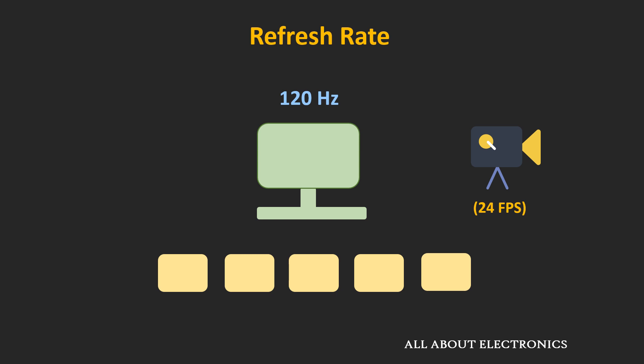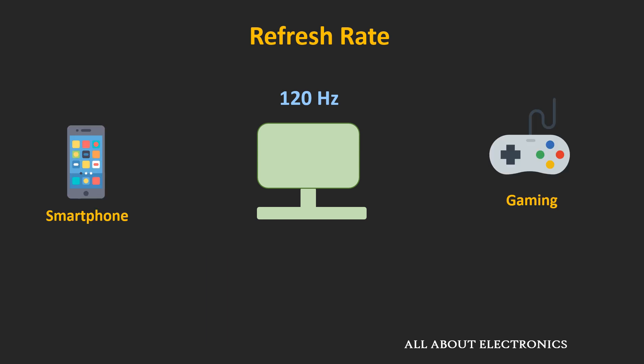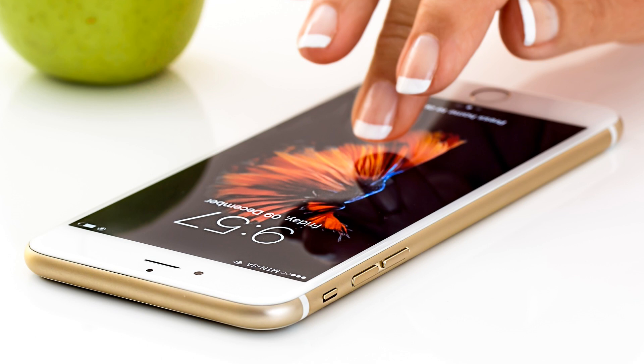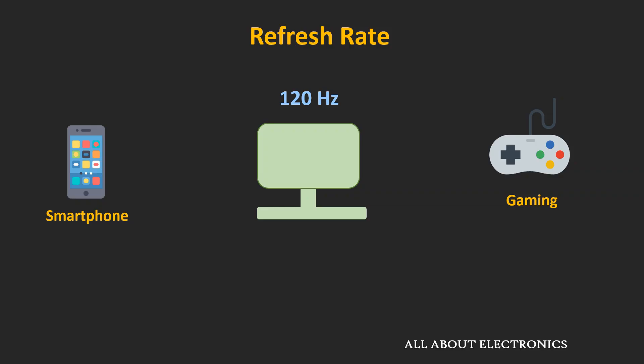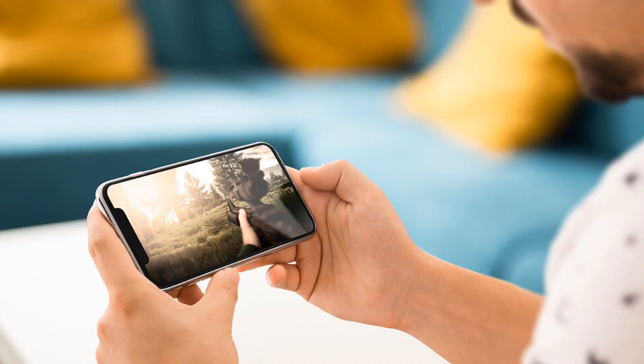In short, to get a better viewing experience, the refresh rate of the display should be more than the frame rate of the content. If you watch 30 fps content on a 60 Hz or 120 Hz TV, it won't make much difference in viewing experience. But high refresh rate displays are very useful when you are interacting with the content on screen — for example, when scrolling on a high refresh rate smartphone, or playing a game at high frame rates, it gives you a smoother experience.